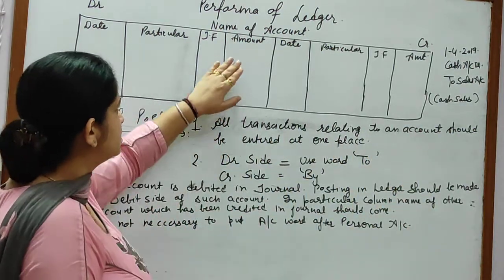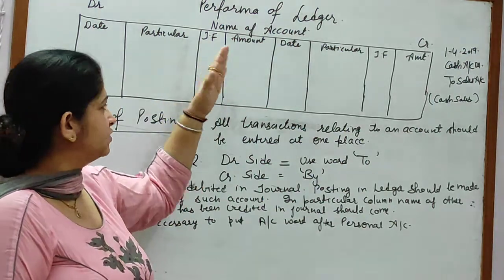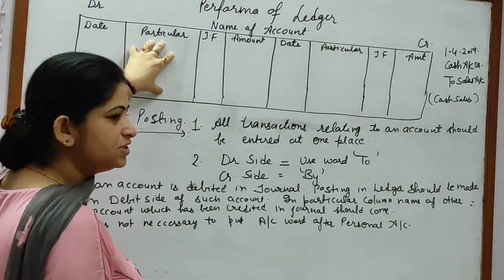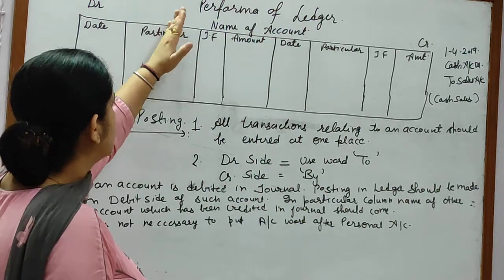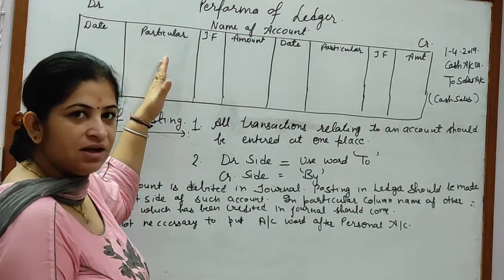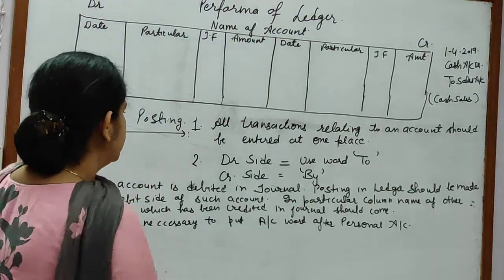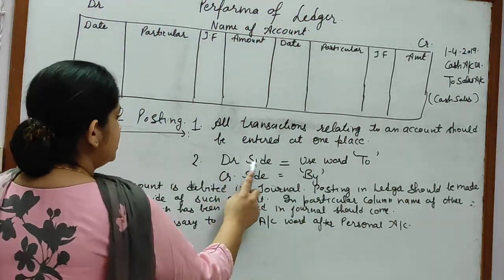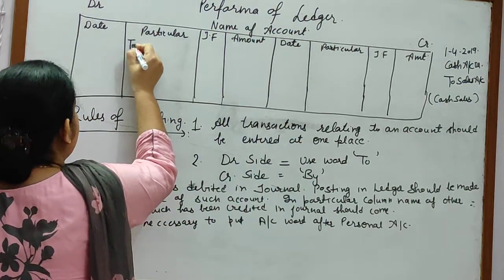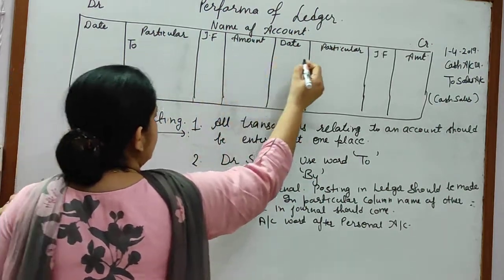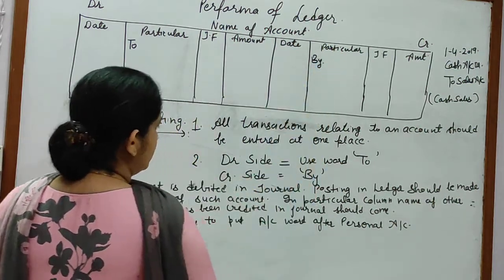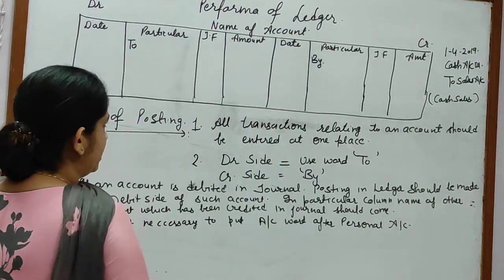Suppose this is the cash account — all cash transactions will come under the cash account. Suppose this is the sales account — all sales transactions will come under the sales account. On the debit side you will use the word 'To' with every account, and on the credit side you will use the word 'By' with every account.